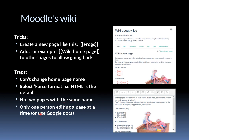With Moodle's wiki, only one person can be editing a page at a time. When I'm teaching wikis at Box Hill, I set up the first page with links to a separate page for each teacher so they can play around. I ask them not to change the home page but to go into their own pages and have a go.